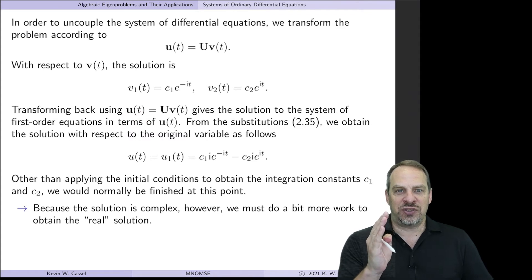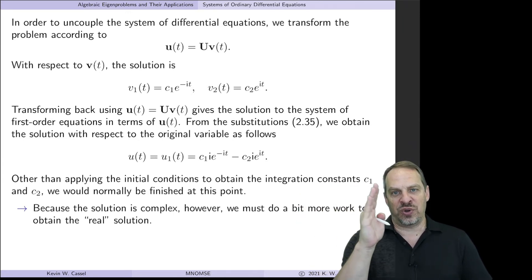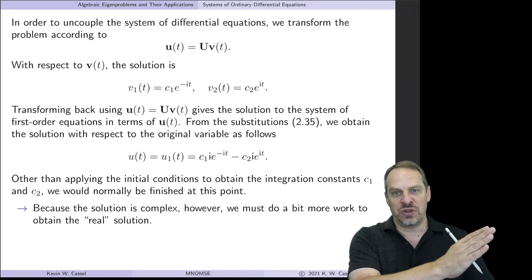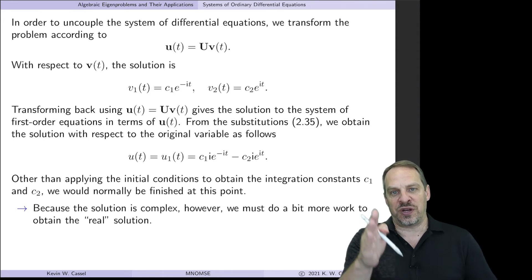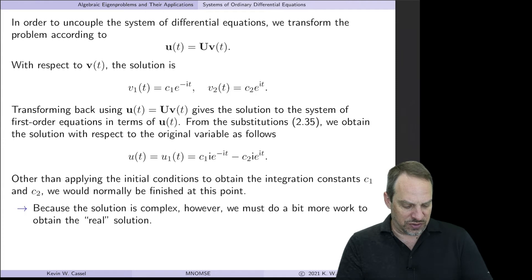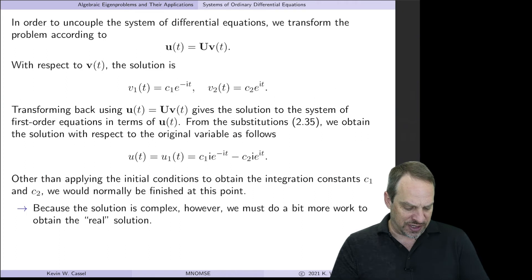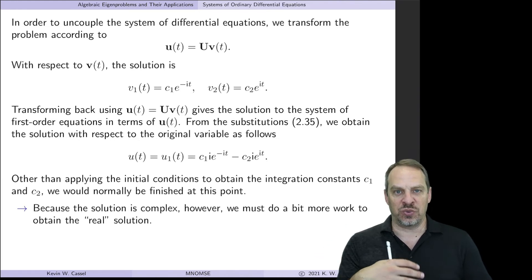We've actually done two substitutions: first from the original scalar U to the system variables U1 and U2, then from U1 and U2 to the new vector V. We convert back twice — from V back to the U vector, and from the U vector back to scalar U. Since U is just U1, the general solution for U is C1i e to the minus iT minus C2i e to the plus iT.